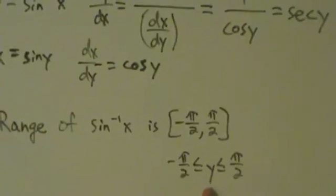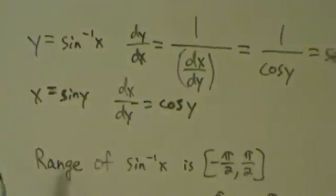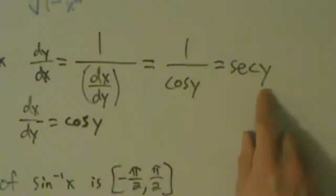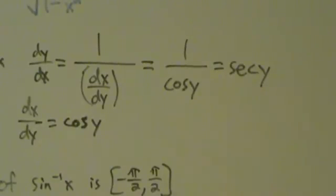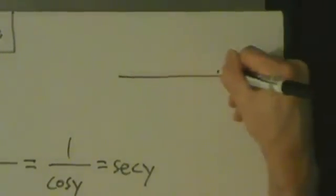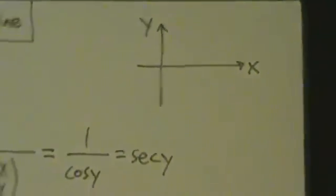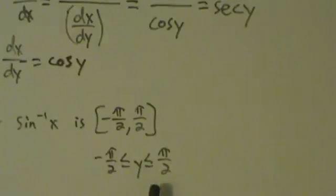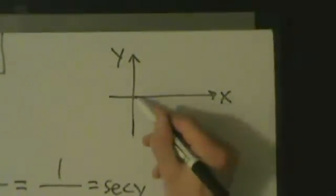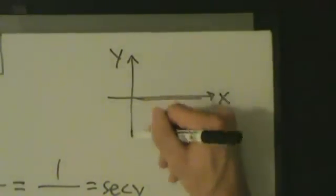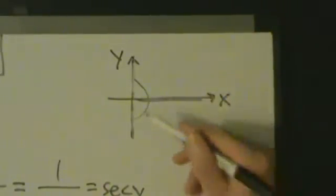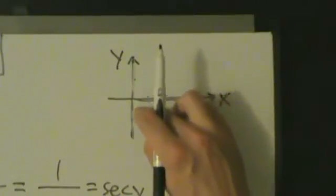So this y is between negative π/2 and π/2. What we're going to do is go to the xy-plane and think about quadrants. An angle of 0 would be on the positive x-axis, negative π/2 is down here, and positive π/2 is up here. So y is somewhere in quadrant 1 or quadrant 4. That means there are going to be two different triangles we have to look at.